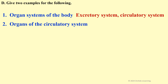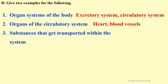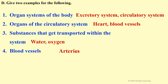Organs of the circulatory system: heart and blood vessels. Substances that get transported within the system: water and oxygen. Blood vessels: arteries and veins.